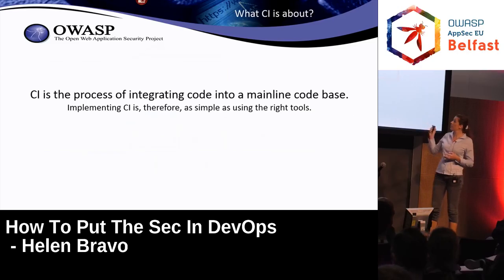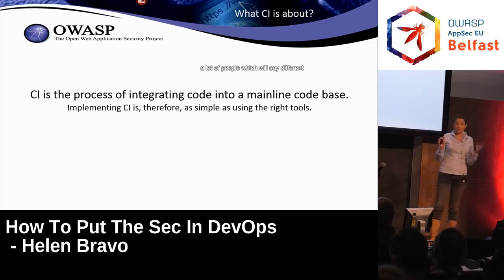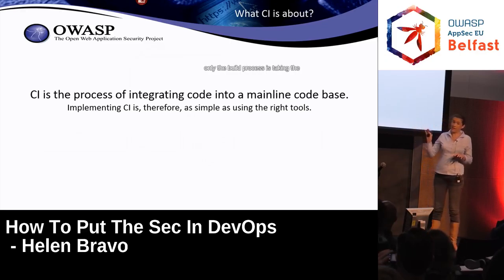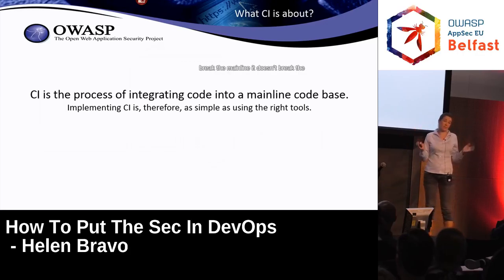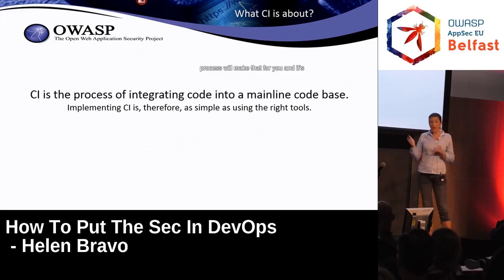The next steps are the blocks of CI and CD, and that's an area of a lot of confusion. What does CI stand for? What does CD stand for? A lot of people will say different things and sometimes confuse CI with CD. CI is basically only the build process — taking the code checked in and committed by the developer, adding it to the mainline, and making sure it doesn't break the mainline. It's about using the right tools, and there are great tools for that today. It's also a great place to apply some security checks.